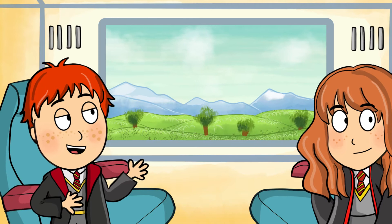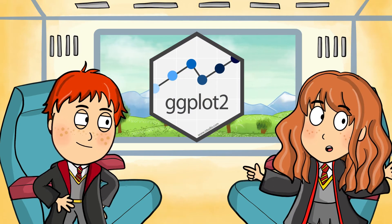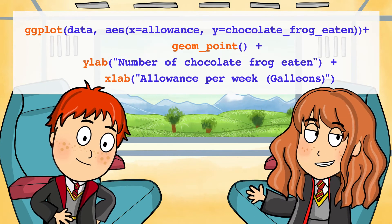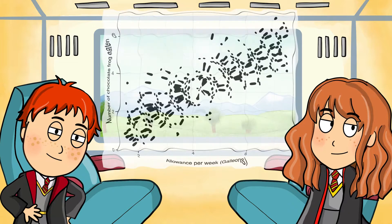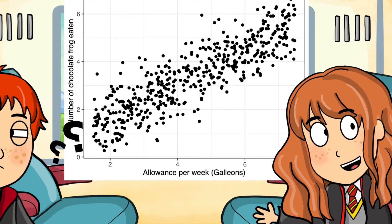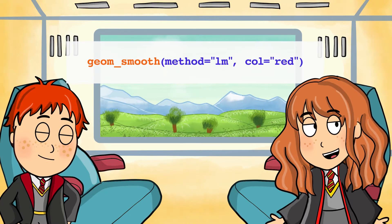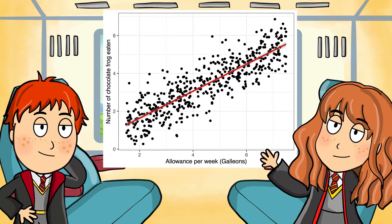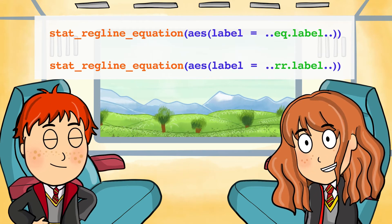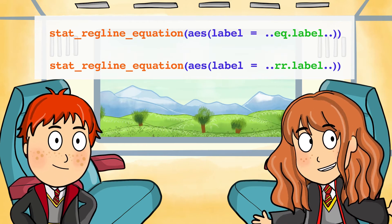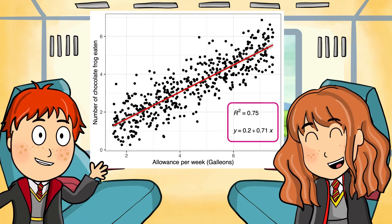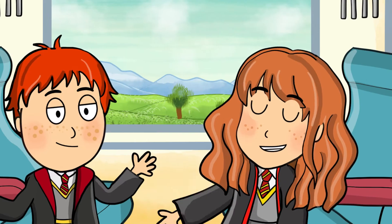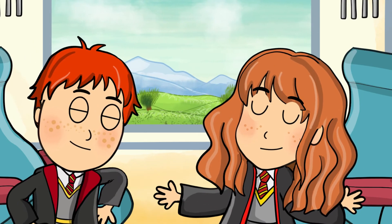Let's visualize the results using the ggplot package in tidyverse. We can use the ggplot function that we learned in the Diagon Alley episode to generate a scatter plot, and the xlab and ylab functions to label the axes. Can we add the regression line on the graph, Hermione? Indeed, we can use the geom_smooth function to add a red regression line. How did you know red is my favorite color? Your hair is a bit of a giveaway, isn't it? We can also use the stat_regline_equation function to add the equation and R-squared value. This graph looks very informative, Hermione. I'm now convinced that the amount of chocolate frogs eaten each week is positively associated with weekly allowance received. By the way, where's Harry? Did he go hunting for more chocolate frogs? Let's go find him!